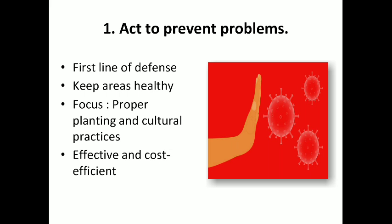So let's see in detail. The first step is to act to prevent problems. As this is the first line of defense, the main aim is to keep areas healthy. The IPM program should focus on proper planting and cultural practices that are effective and cost efficient.